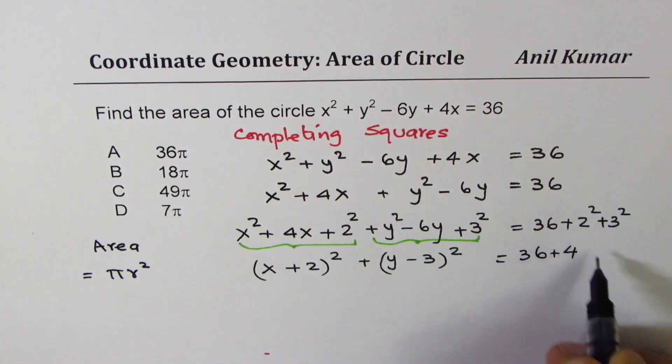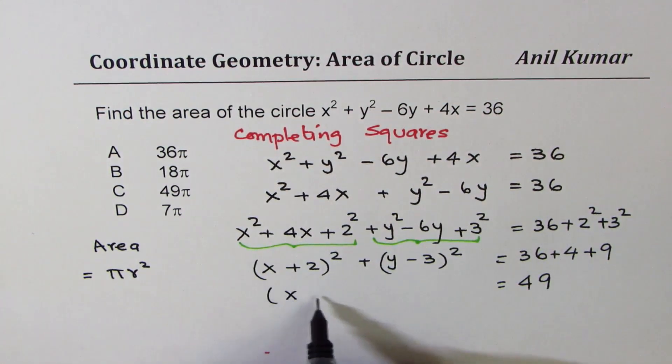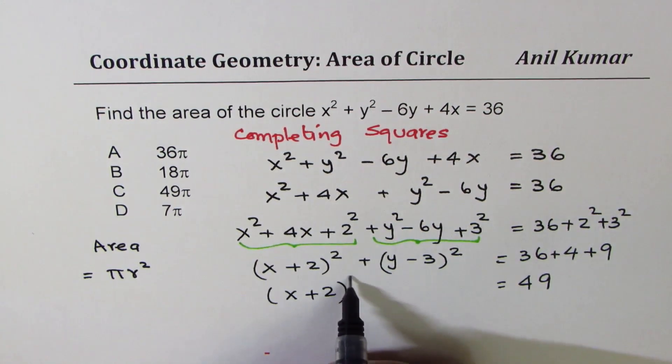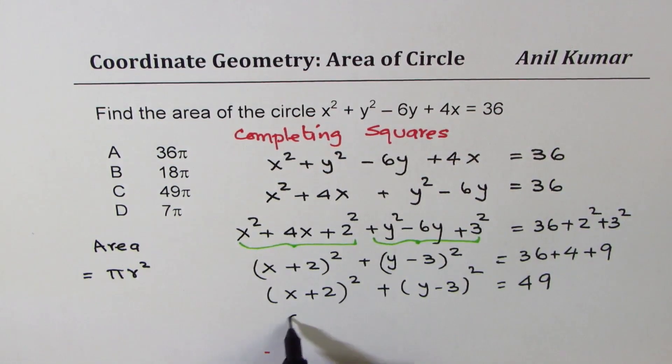36 + 4, which is 40, plus 9, 49. So let me write 49 here. And equation of circle as (x + 2)² + (y - 3)². So here we have center.